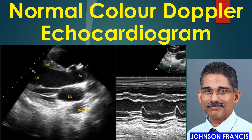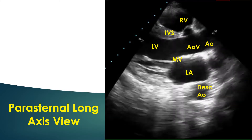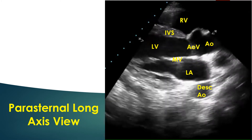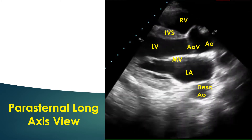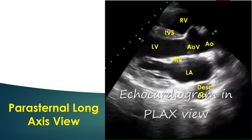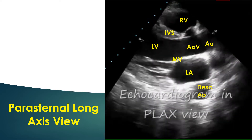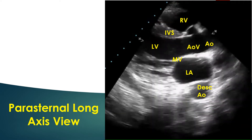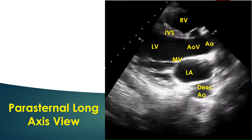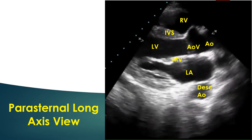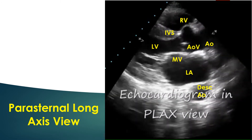Normal color Doppler echocardiogram. Parasternal long axis view is usually the first view obtained during echocardiography. It is obtained by keeping the transducer in the left parasternal region with the subject in the left lateral position. The beam cuts the heart in its base to apex axis.